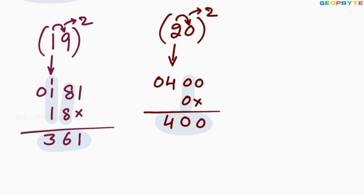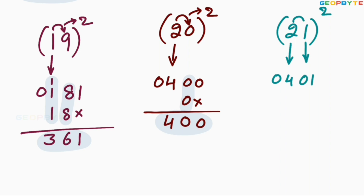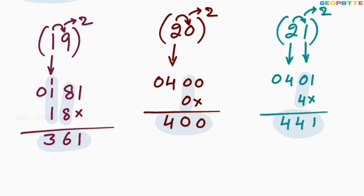Similarly, 21 square: 2 square is 04, 1 square is 01. Then 2 into 1 is 2, 2 into 2 is 4. Leave the first space, write 4. Add these two values: 1, 0 plus 4 is 4, 4. Therefore, 21 square is equal to 441.